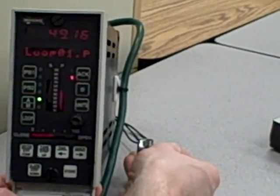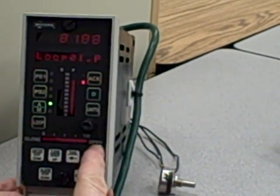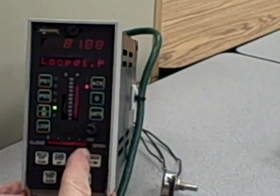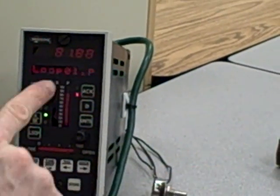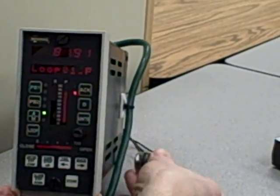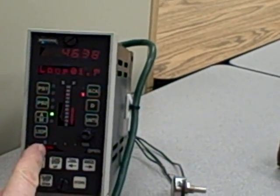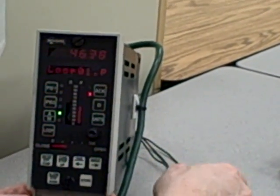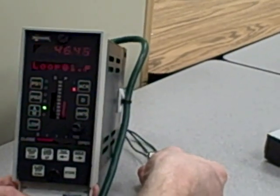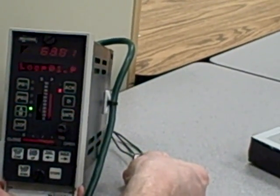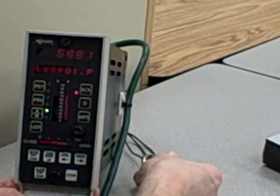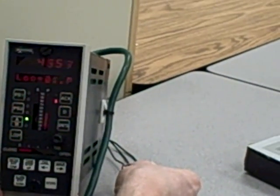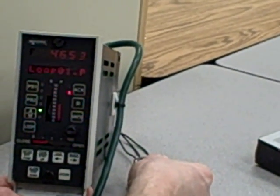So watch as I increase the process variable. It spikes up, and then it settles into its new value. Now I'll decrease the process variable. It spikes down, and then it comes and settles up. So again, every time I move my process input, I get a spike on the output, and then it settles. Every time I move the process input, I get a spike on the output, and then it settles. That is a lead function.